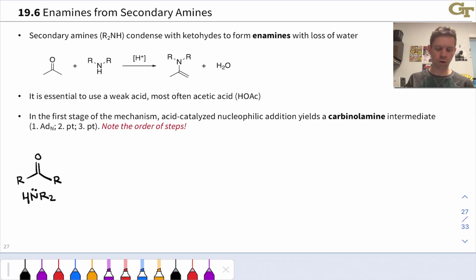Secondary amines contain two R groups linked to the amino nitrogen, and because they do not have two hydrogens linked to that nitrogen, they react differently with ketones and aldehydes than primary amines, which react to form imines containing a CN double bond.